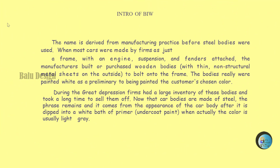Intro of BIW: The name is derived from manufacturing practice before steel bodies were used, when most cars were made as just a frame with an engine, suspension, and fenders attached. Manufacturers built or purchased wooden bodies with thin, non-structural metal sheets on the outside to bolt onto the frame. The bodies were painted white as a preliminary to being painted the customer's chosen color. During the Great Depression, firms had a large inventory of these bodies. Now that car bodies are made of steel, the phrase remains and comes from the appearance after being dipped into a white bath of primer undercoat paint.